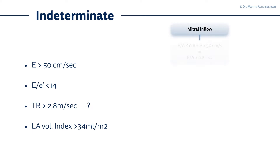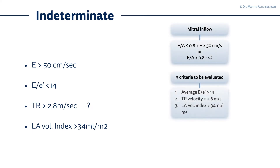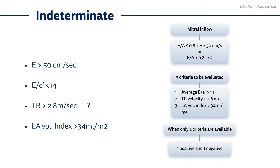The mitral valve inflow signal showed an E above 50 cm/s, even though the E to E ratio was below 0.8. We evaluated the three criteria but only had the E to E prime ratio below 14 — namely 8.5 — and the left atrium volume index above 34 mL/m², specifically 41 mL/m², which is definitely pathological. So the situation is now indeterminate: we do not know if filling pressures are elevated, or if it is diastolic dysfunction grade 1 with normal filling pressures or grade 2 with likely elevated filling pressures.